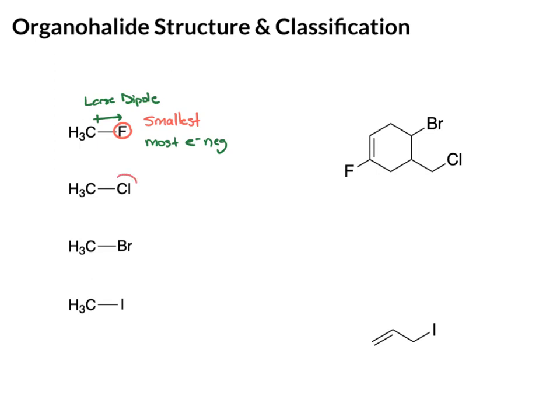Chlorine is a little bit larger than fluorine, bromine is larger than chlorine, and iodine is larger than bromine. This has an impact on the bond. In the case of the large iodine atom, this size is really pushing this bond apart, and that causes it to be longer than the carbon-fluorine bond. With the small fluorine atom, we don't have that same type of push on the bond, so that bond is shorter.